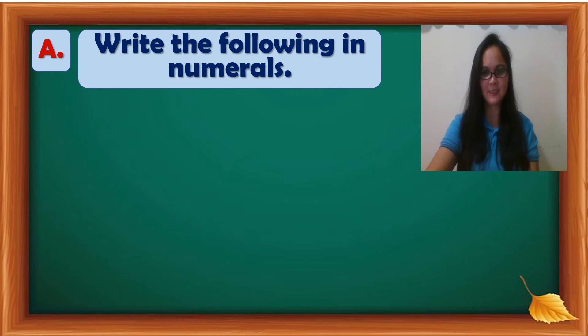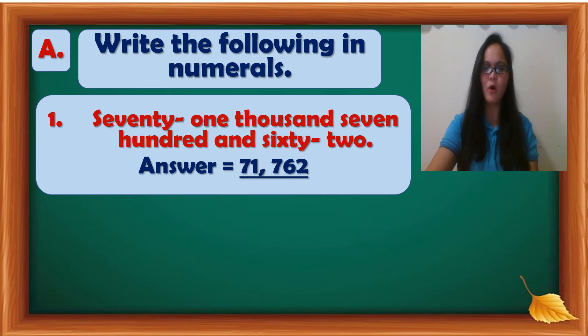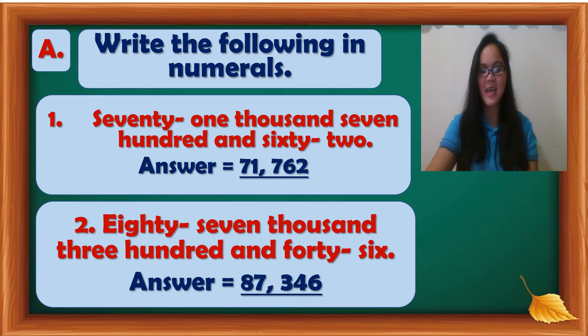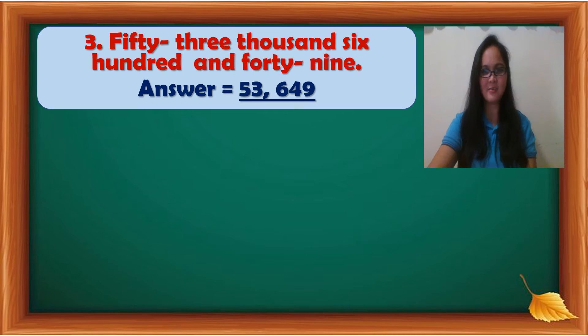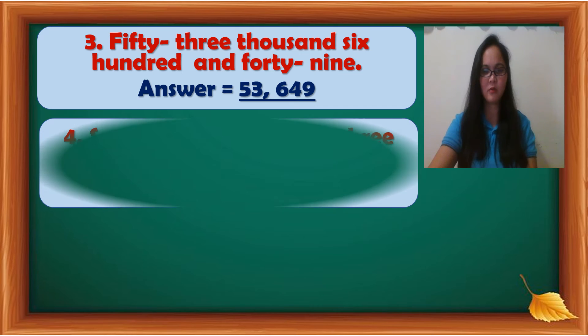Answer for letter A. Number 1: 71,762. Answer: 71,762. Number 2: 87,346. Answer: 87,346. Number 3: 53,649. Answer: 53,649.